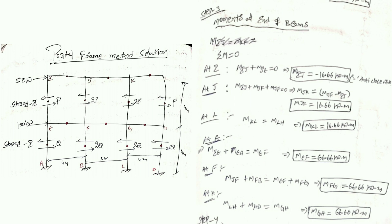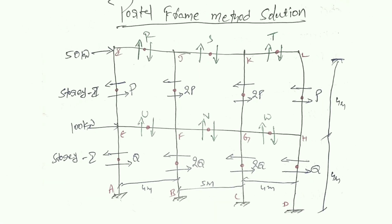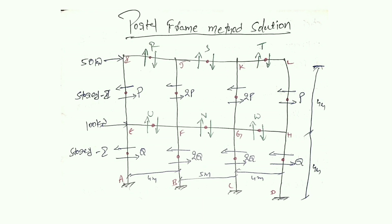There are six beams in total, and by applying joint equilibrium at each joint we obtain all six beam-end moments. At joint F, two columns (JF and FB) and two beams (EF and FG) intersect. We know the column moments JF and FB from Step 2, and since we already know the moment in beam EF from the previous joint, we can calculate the moment in beam FG.